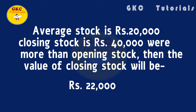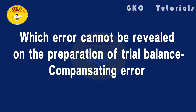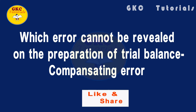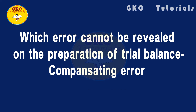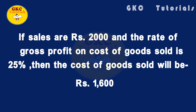If average stock is rupees 20,000 and closing stock is rupees 40,000, which is more than opening stock, then the value of closing stock will be rupees 22,000. Which error cannot be revealed on the preparation of a trial balance? Answer is compensating error. If sales are rupees 2,000 and the rate of gross profit on cost of goods sold is 25%, then the cost of goods sold will be rupees 1,600.